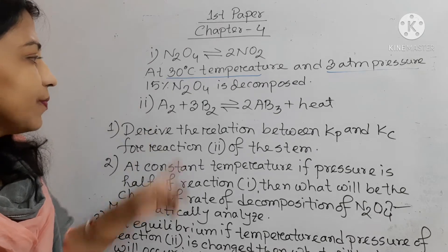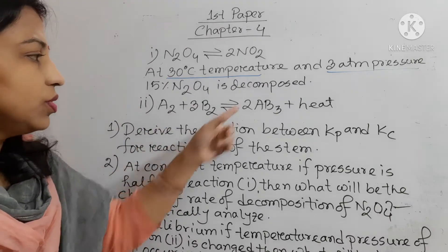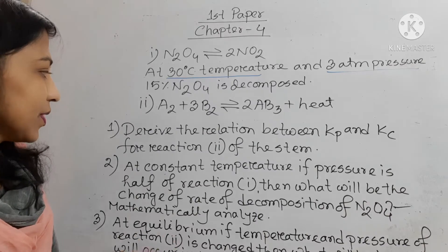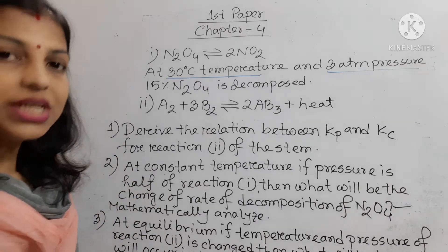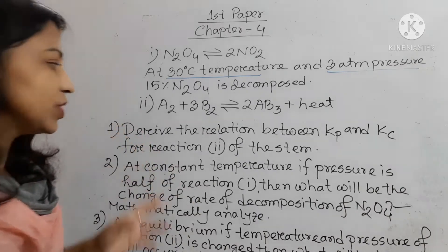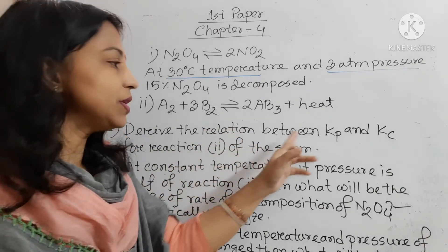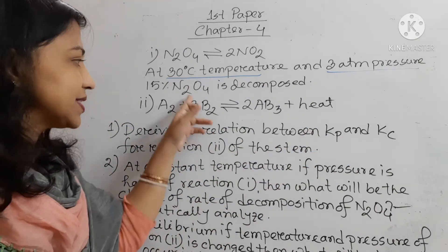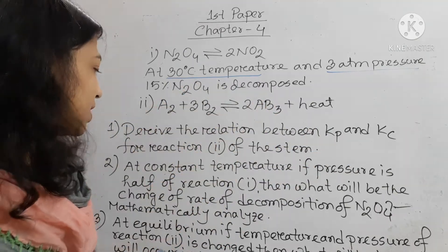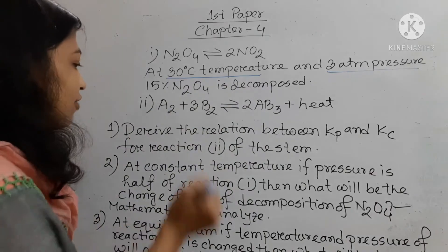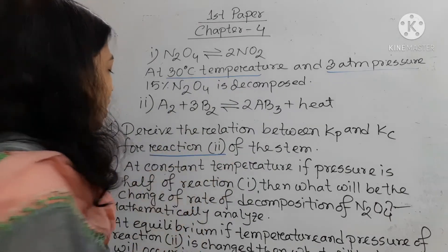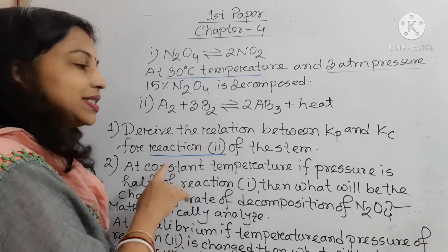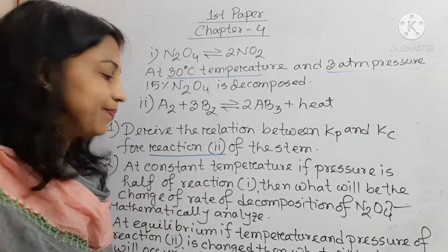Number 2: A2 + 3B2, the product is 2AB3 plus heat. The first question is: derive the relation between Kp and Kc for reaction 2 of the stem, that means for this reaction A2 + 3B2 ⇌ 2AB3.